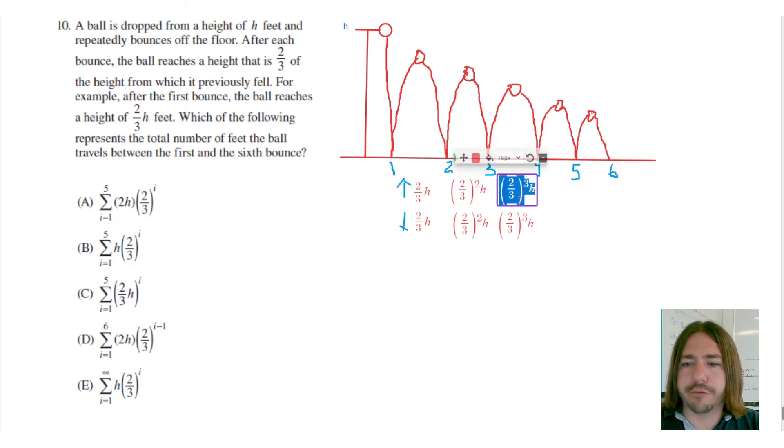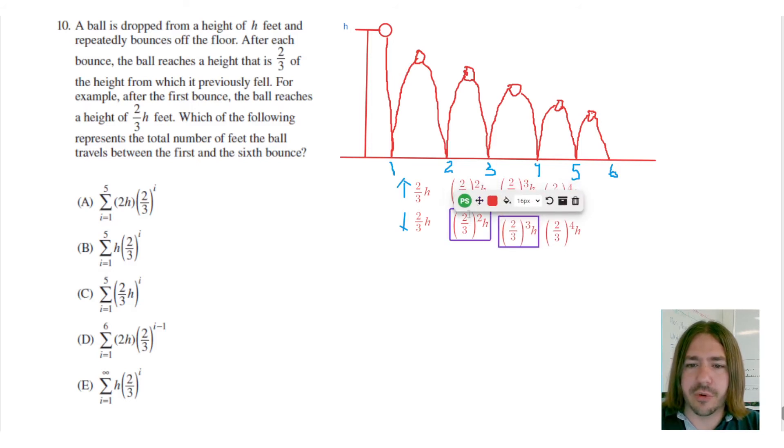So after the fourth bounce, it's going to be two-thirds to the fourth power, because we're going to multiply two-thirds four times. We're getting a little crowded here, but hopefully you can see what I'm trying to explain as far as how to compute all these different distances. Whether you're going up or down, we got to keep track of both of those. I'm just going to move this a little bit, make it easier to read.